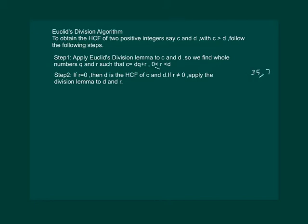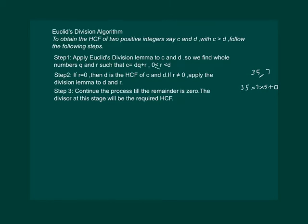For example, if C is 35 and D is 7, then 35 is equal to 7 into 5 plus 0. That means we get remainder 0 and we come to the conclusion that 7 is the HCF of 35 and 7. That is what we are stating: if R is 0, then D is the HCF of C and D. And if this R is not 0, then take D and whatever is the R and again apply the division lemma to them. Step 3 is to continue the process till we get the remainder 0. As soon as we get the remainder 0, the divisor at that stage will be the required HCF.